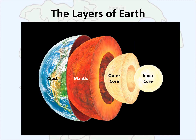The interior of the earth consists of three main layers: the core, which is super hot and super dense with iron and nickel inside; the mantle, which is solid to near liquid silica-rich rocks; and the crust, which is made of solid silica-rich rocks.